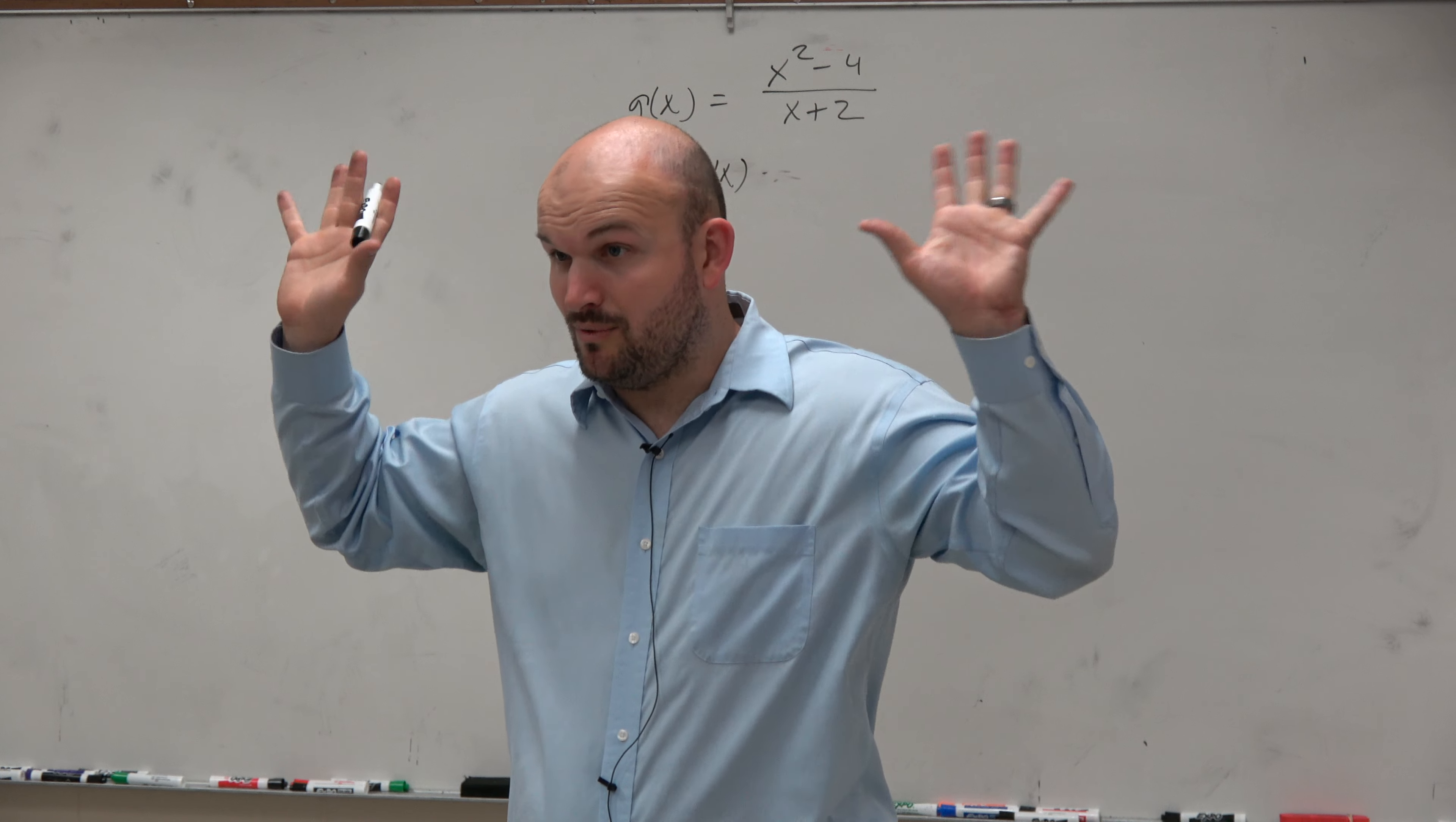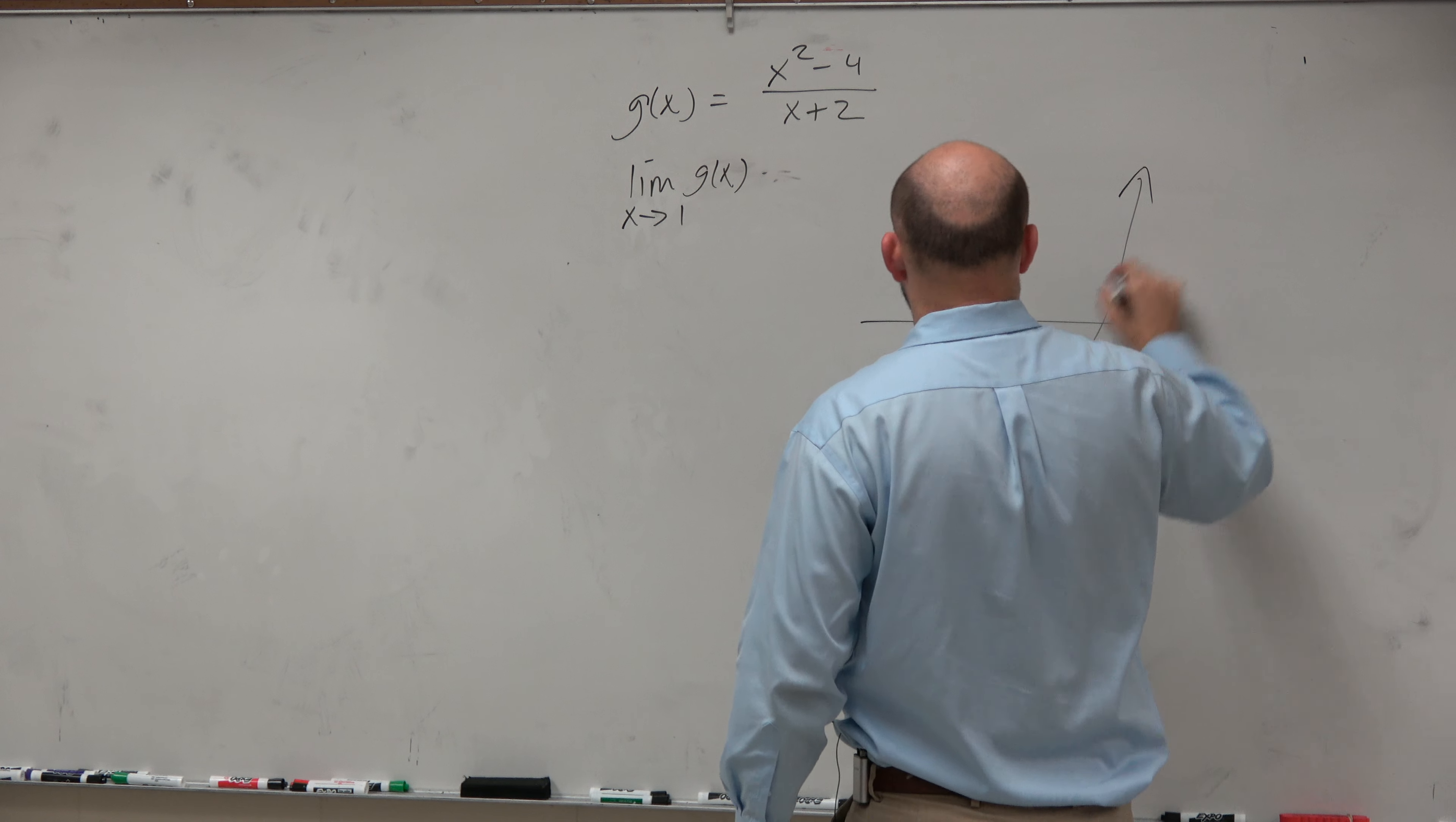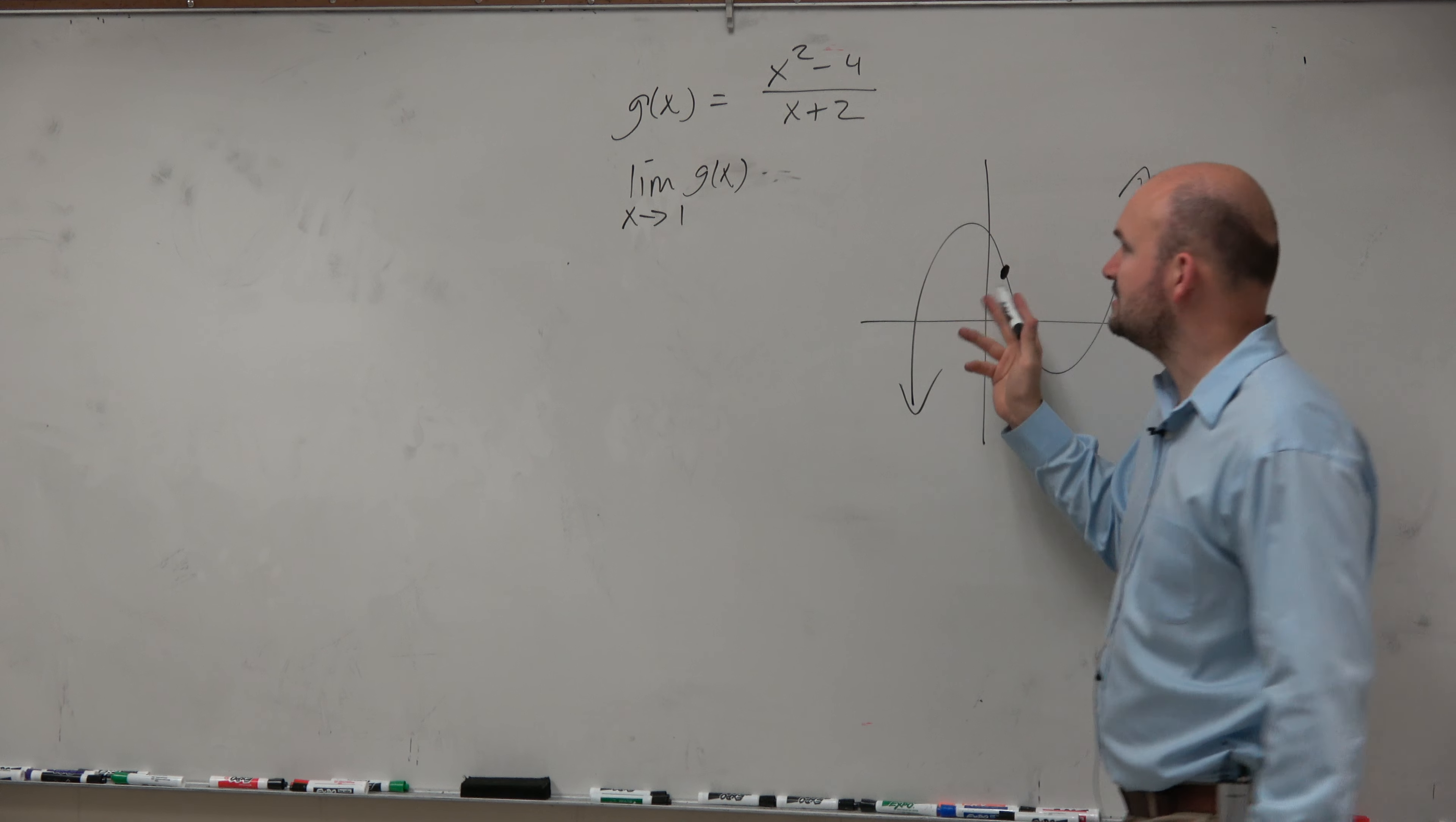Let's just pretend this graph looks like something we did at the beginning. So at 1, let's pretend there's a value. If you were to plug in g of 1, you're going to get some value.